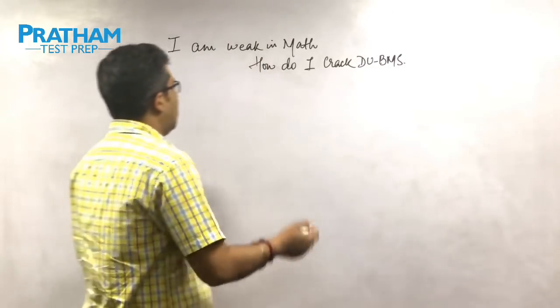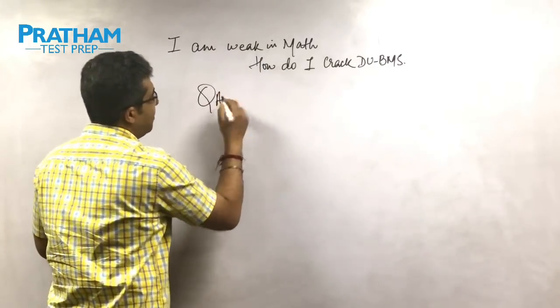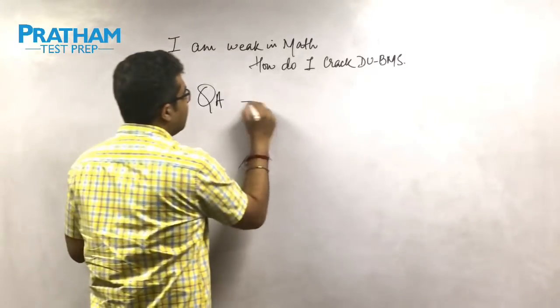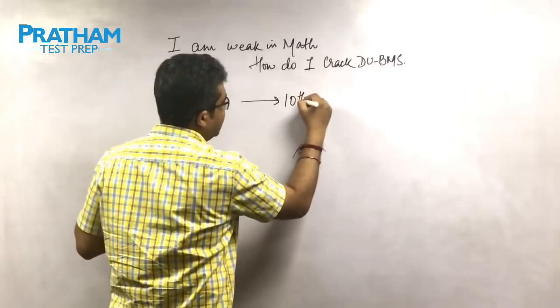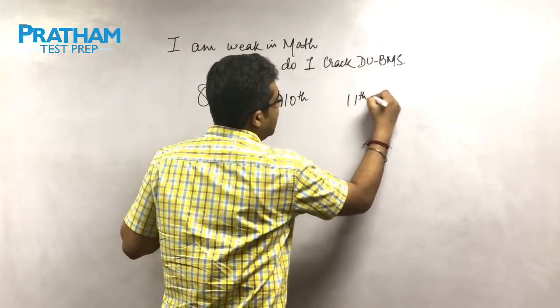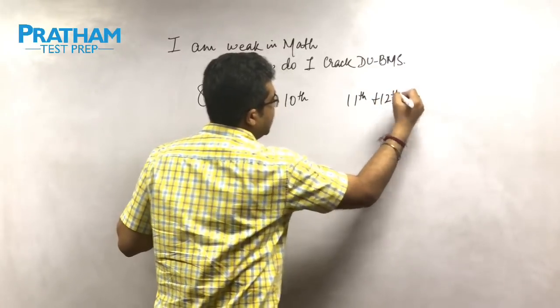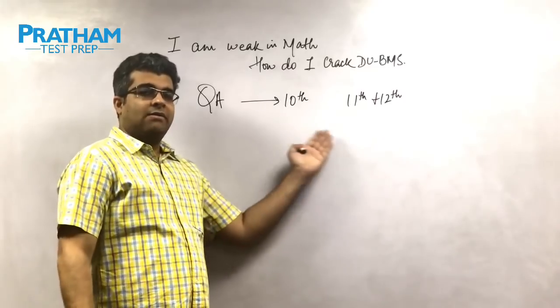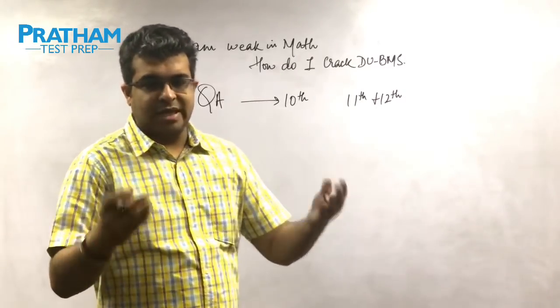Now when you're talking about math or how we know it as quantitative aptitude, first it's very important for us to understand what's in it. You'll have basic 10th level maths that will be checked along with 11th and 12th mathematics checked. Now 11th and 12th maths and quantitative aptitude are per se different.